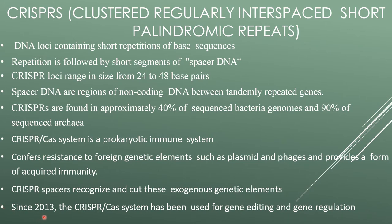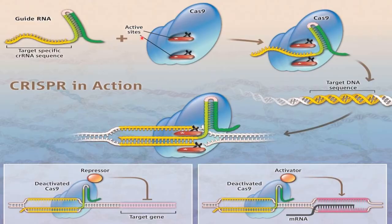Since 2013, the CRISPR-Cas system has been used for gene editing and gene regulation. Usually the CRISPR system consists of two parts: one is a guide RNA, which is a single-stranded RNA with a target-specific CRISPR RNA sequence, and the other is a Cas9 nuclease.